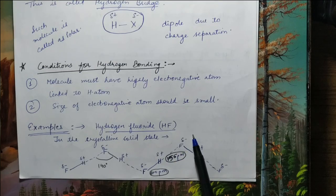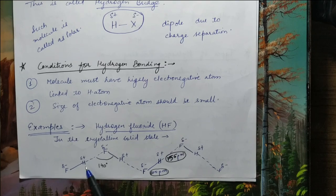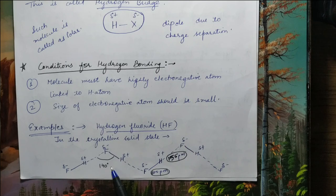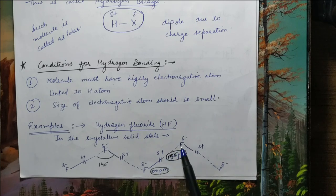The first example is Hydrogen Fluoride (HF). In the crystalline solid state it exists in a particular form. You can see here one HF molecule and another HF molecule. The highly electronegative atom carries a partial negative charge and the hydrogen end carries a partial positive charge. You can see the bent zigzag structure with a bond angle of 140 degrees. You can see one covalent bond and one hydrogen bond, and the bond lengths are different.